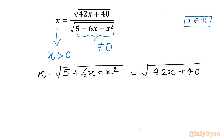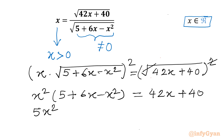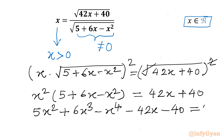Now consider squaring both sides. The square root and square cancel on each side. Left-hand side becomes x² times (5 + 6x - x²), and right-hand side is 42x + 40. Expanding gives 5x² + 6x³ - x⁴ - 42x - 40, and the right-hand side becomes 0.